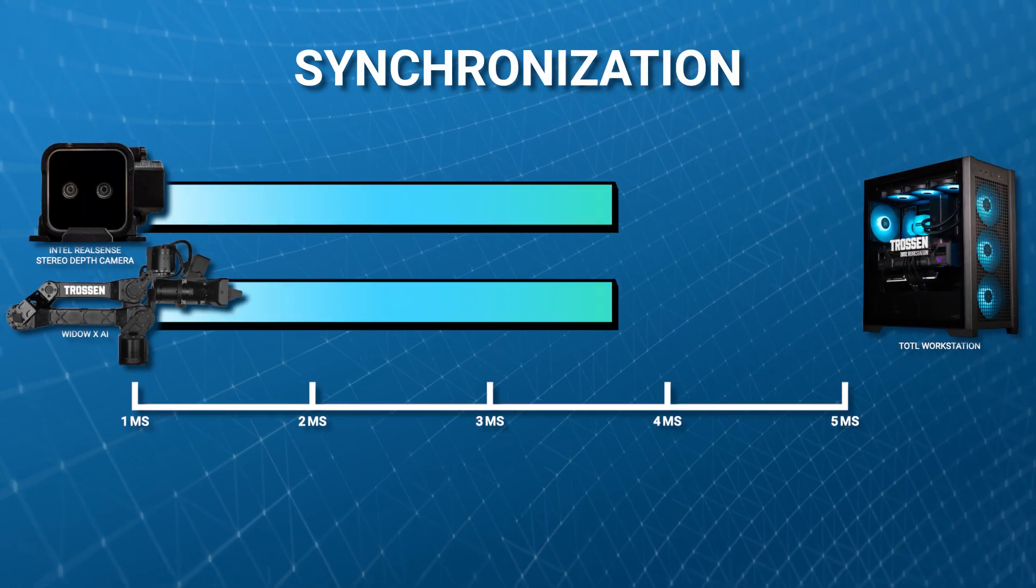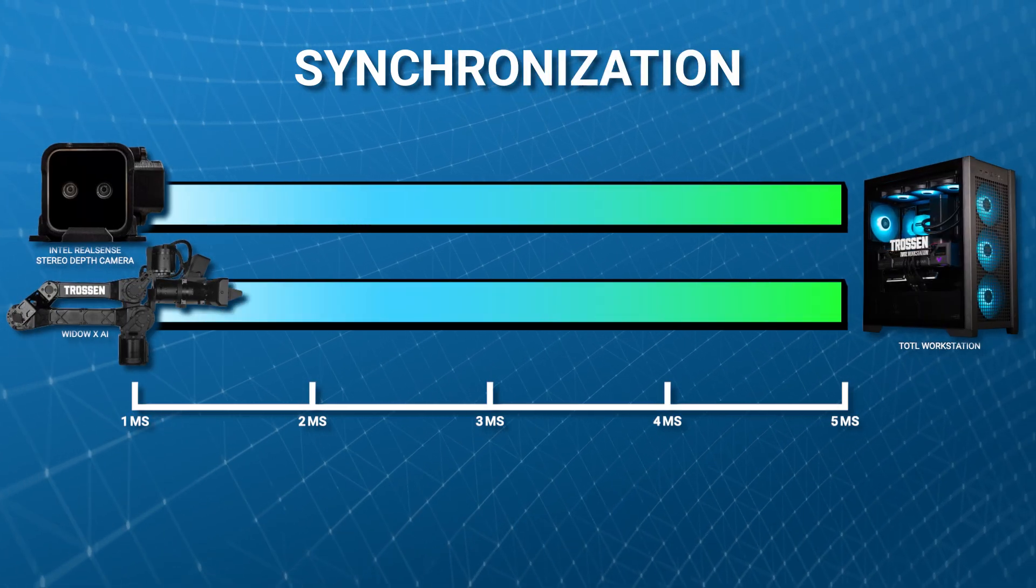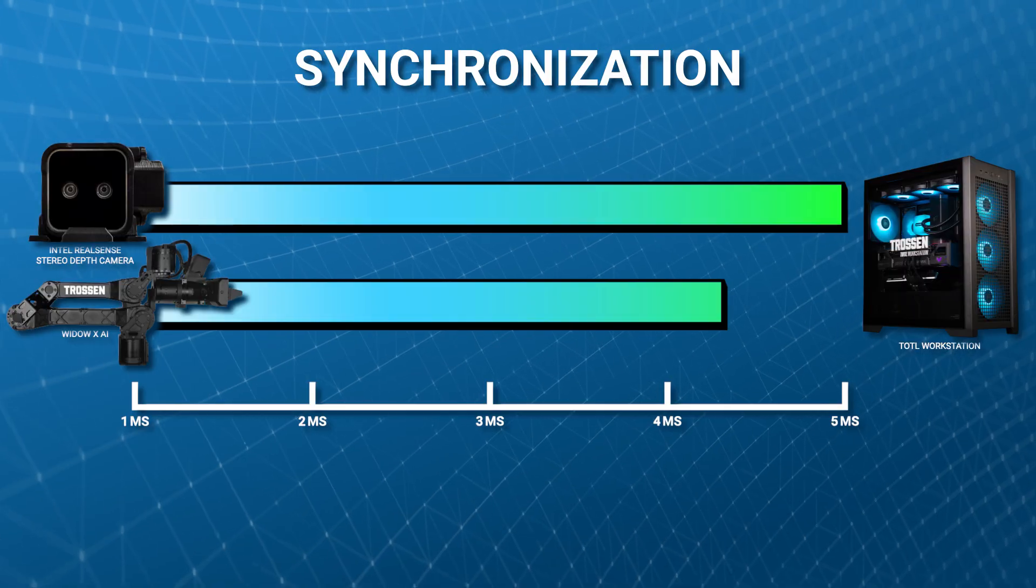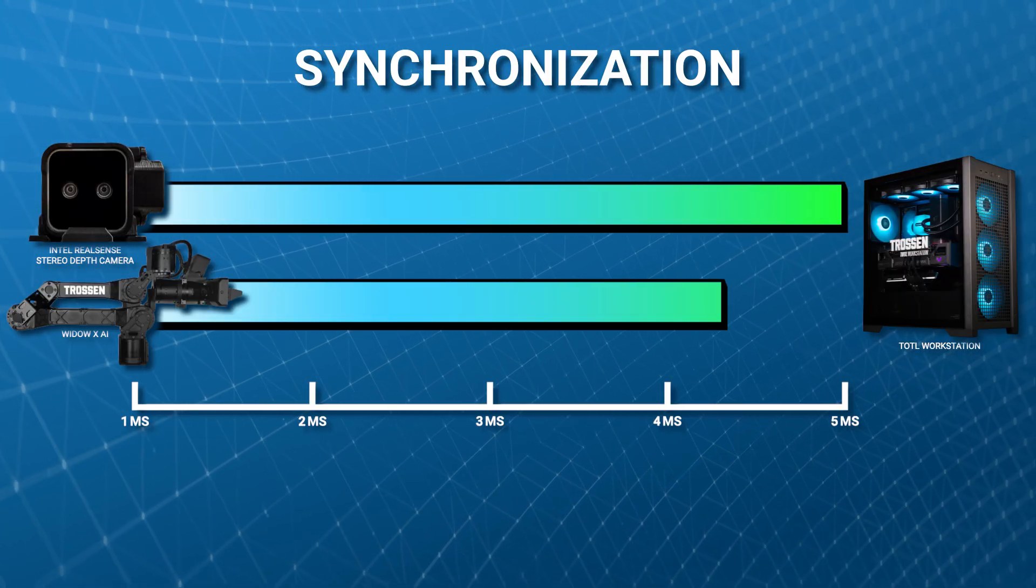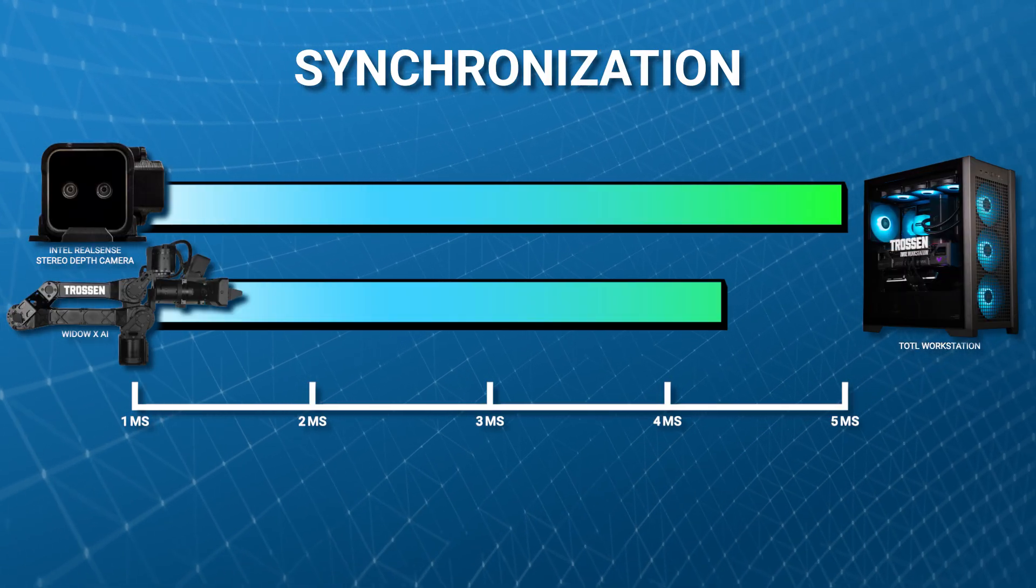It's important to have vision and action synchronized. If you're off by even a little, say the robot camera sees an object move before the joint states are recorded, your model will learn the wrong lesson.